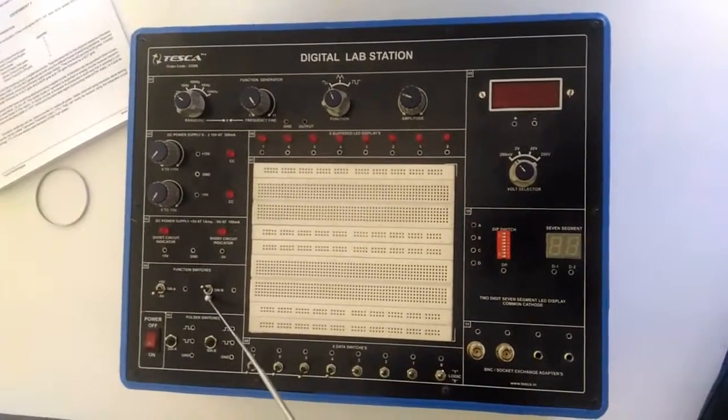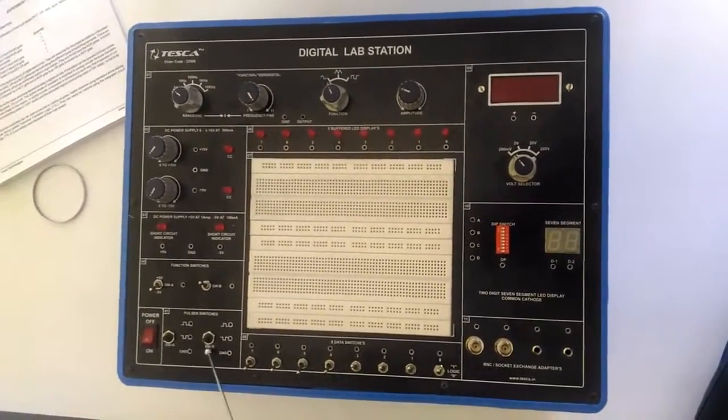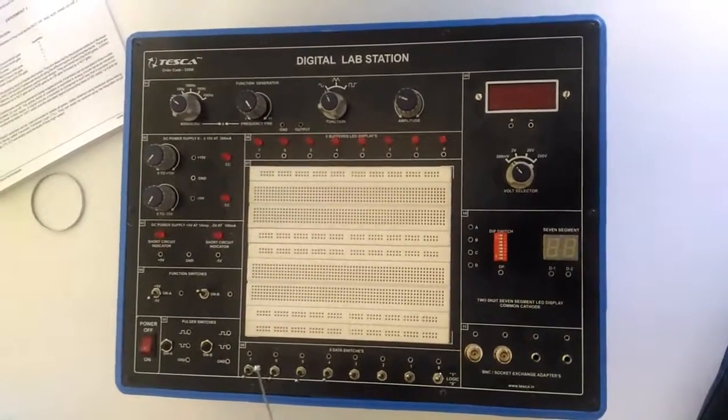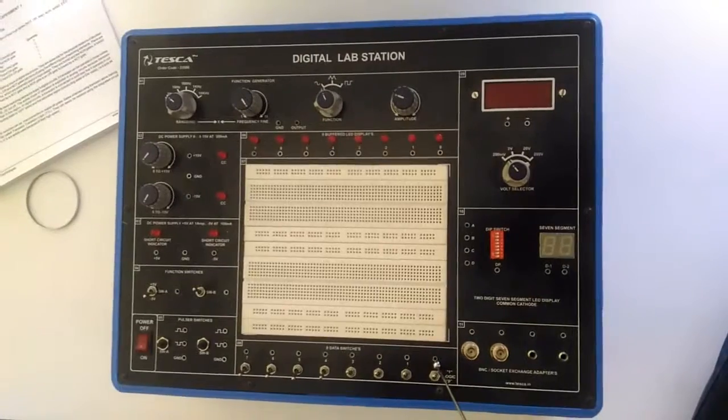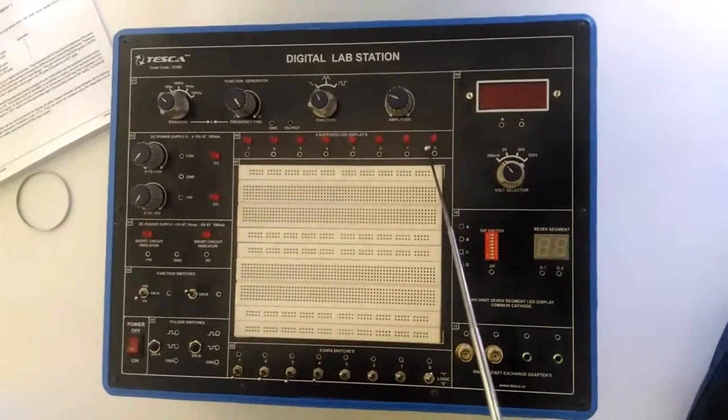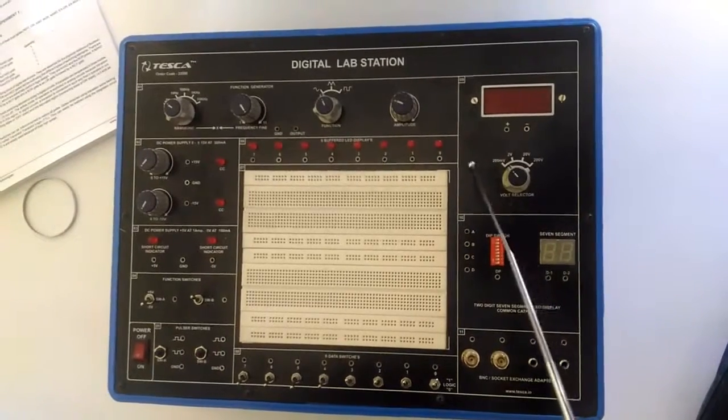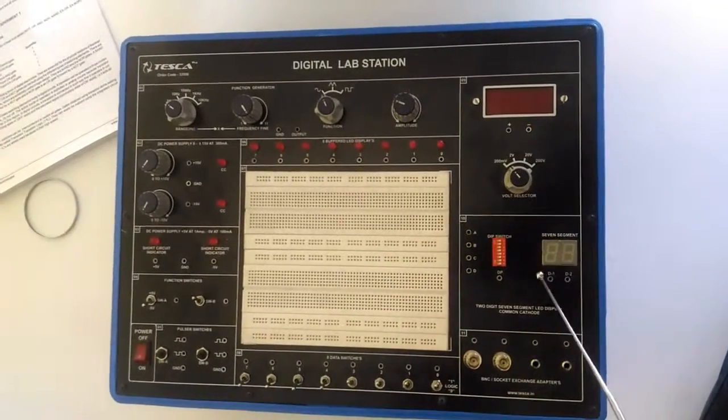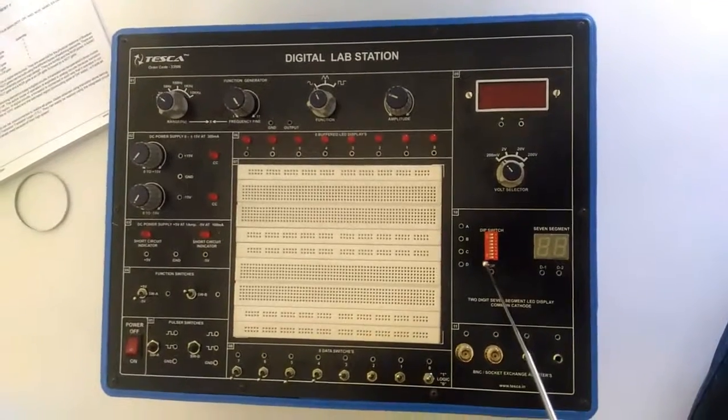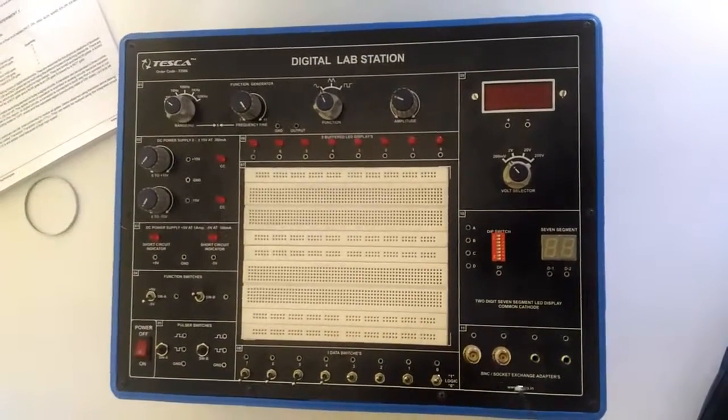These are two function switches. These press switches are the pulsar switches to give pulsar to the different circuits. This is the eight data switches for inputs. These are the output eight buffered LED display. This is the volt meter. This is the two digit seven segment display. This is DIP switch and this is the BNC socket.